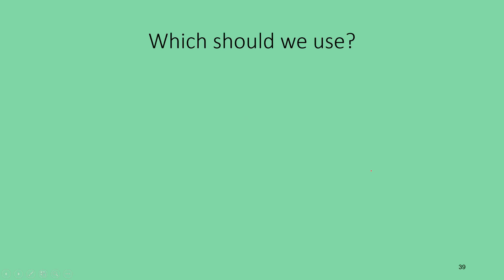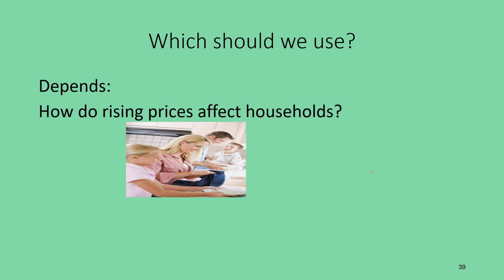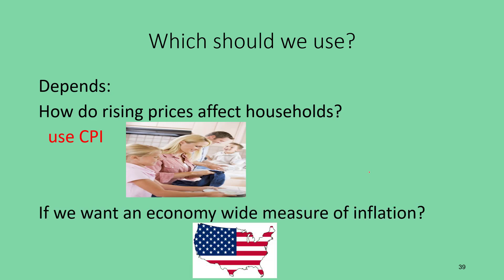So which index should you use? It depends on your goal. If you want to measure how rising prices are affecting households, use the CPI — it only includes things households buy, whether domestic or imported, using a consistent basket over time. If you want an economy-wide measure of inflation that includes businesses and governments, use the GDP deflator. If you're converting nominal GDP into real GDP, use the GDP deflator.